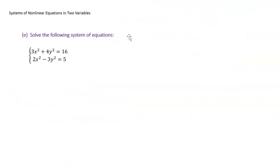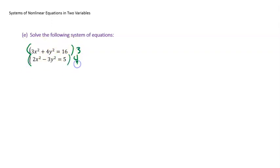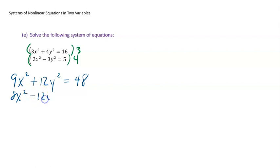Let's try another problem. I highly suggest you pause, work it out, and see if you get the same answer. Since this system has x squareds and y squareds already lined up, this is screaming to use the elimination method. I'll get the y squareds to cancel by multiplying the first equation by 3 and the second by 4: giving 9x² + 12y² = 48 and 8x² − 12y² = 20.